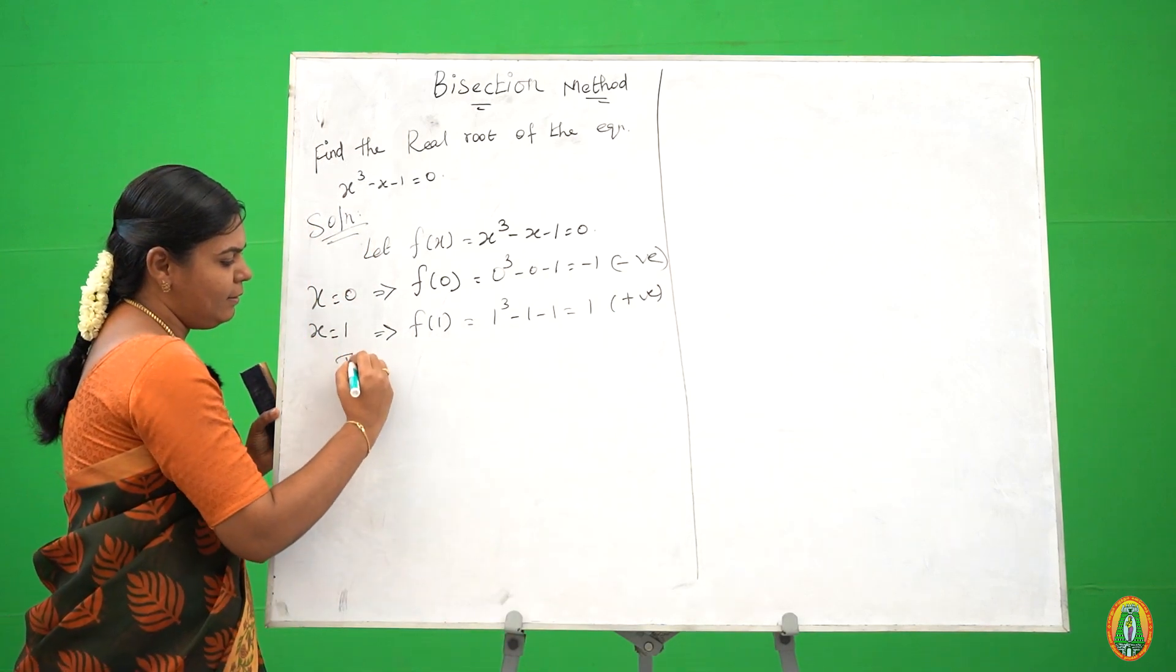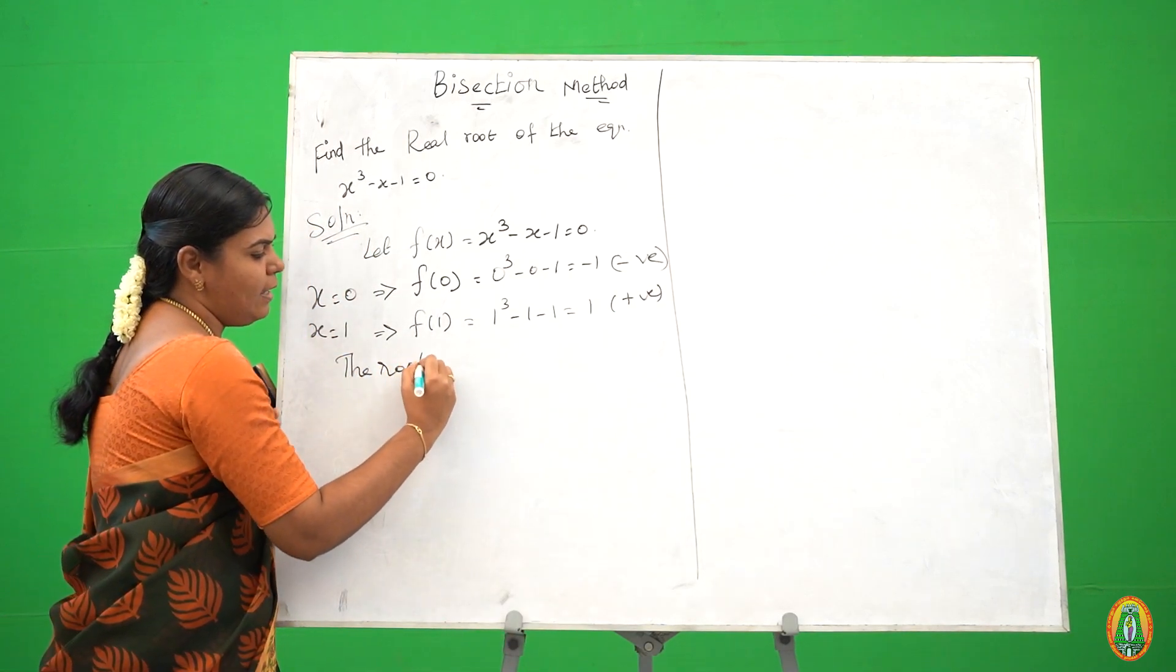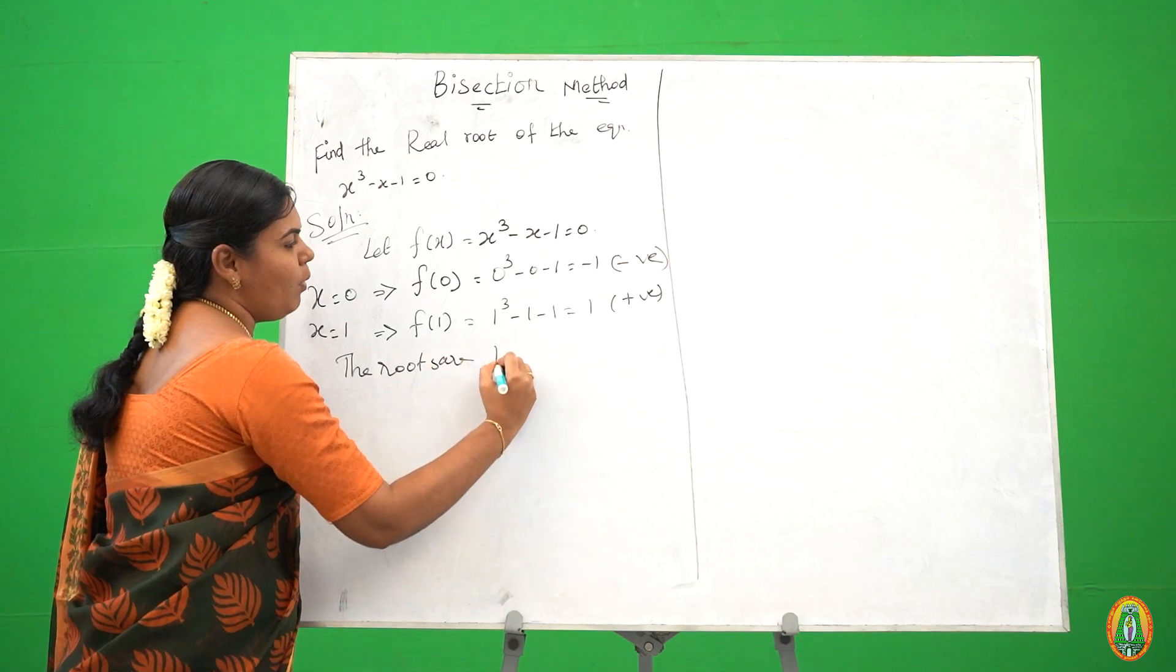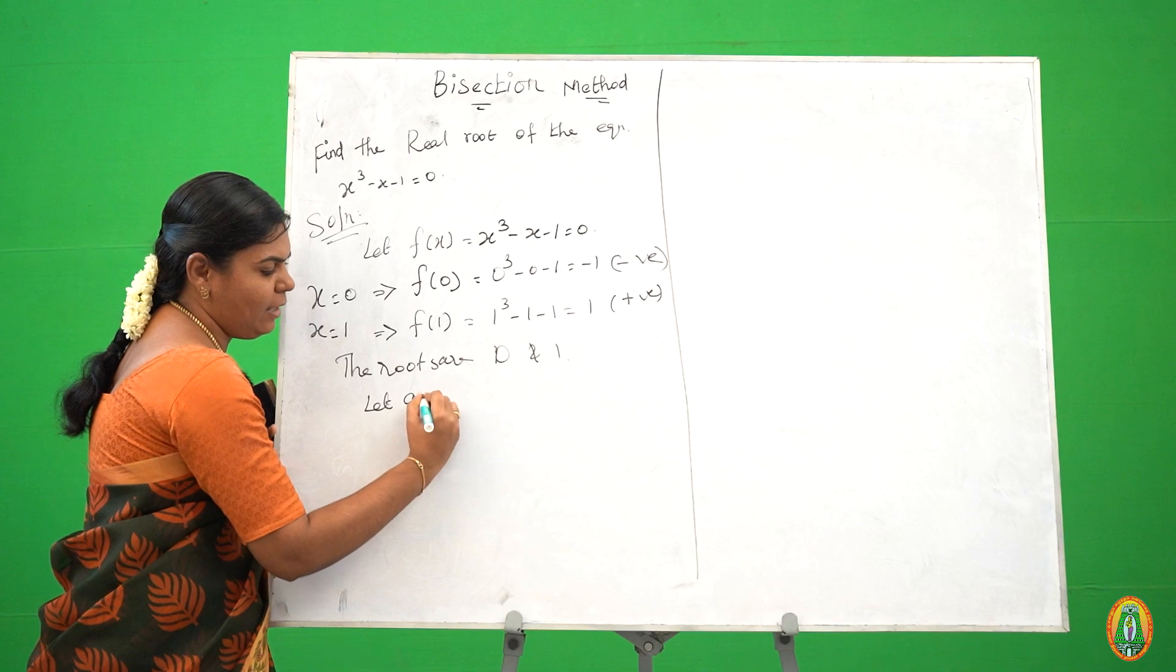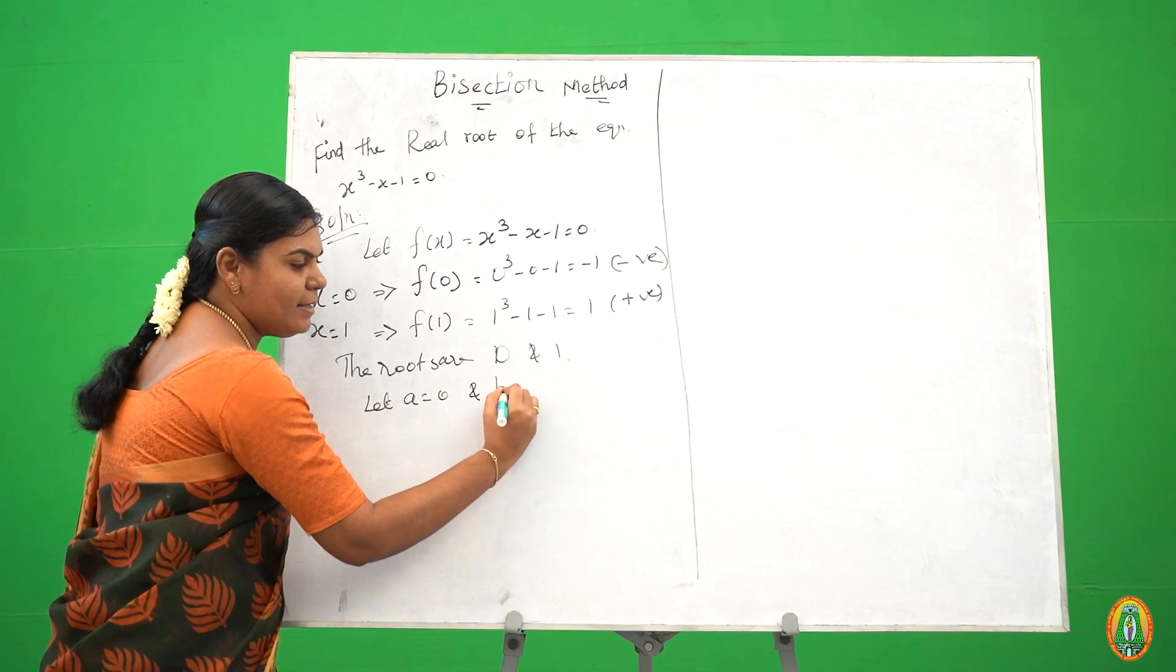So the roots are between 0 and 1. So we take let a is equal to 0 and b is equal to 1.